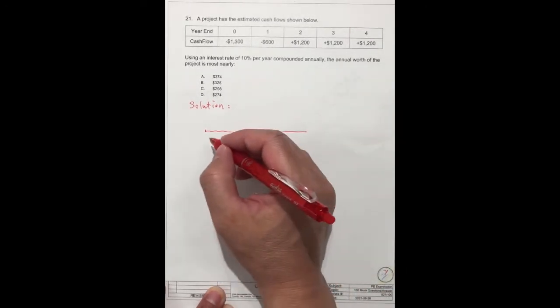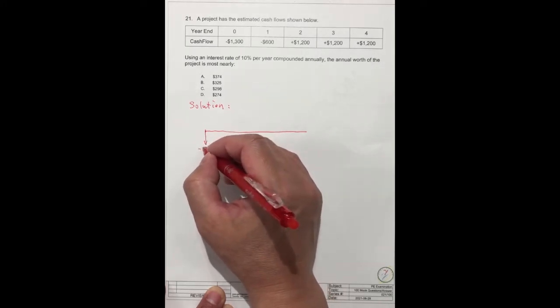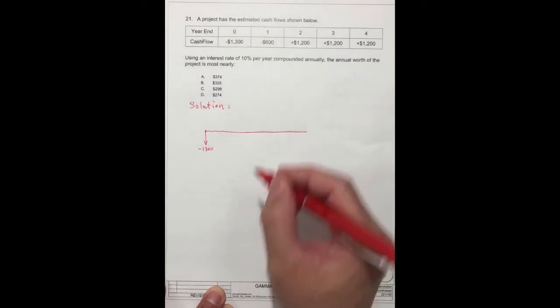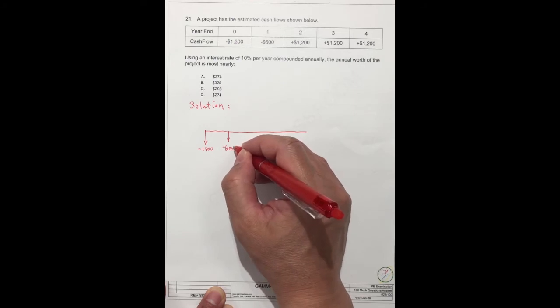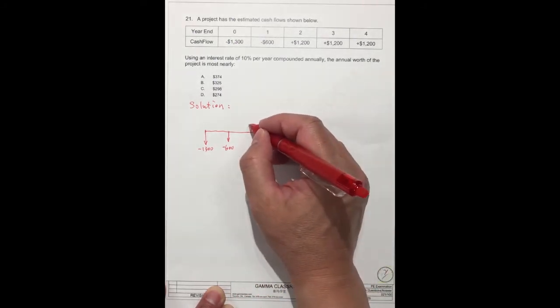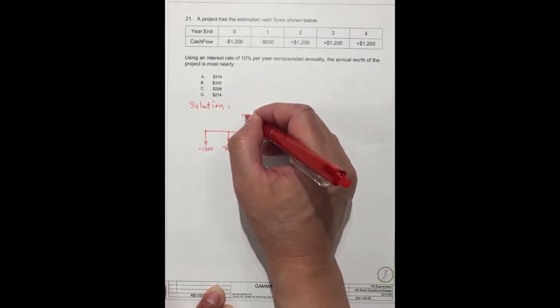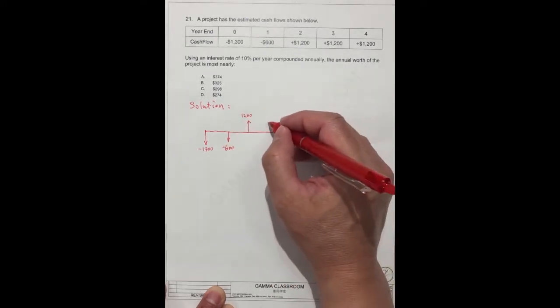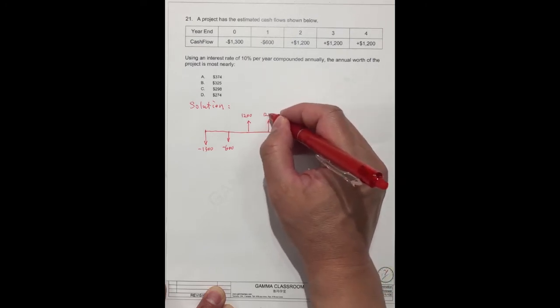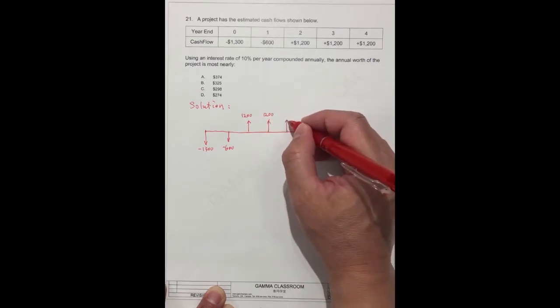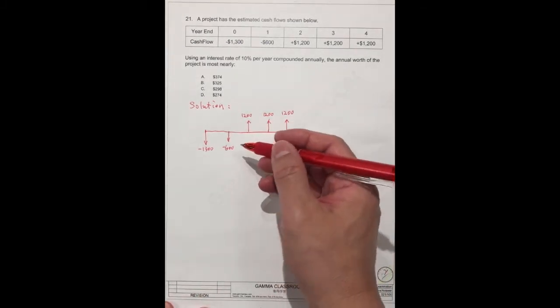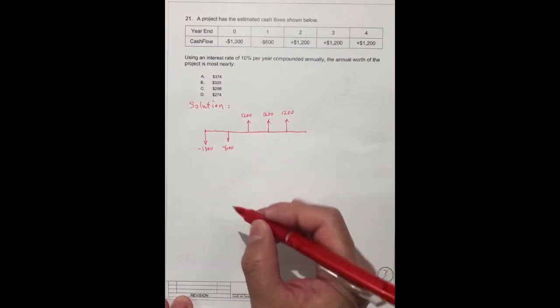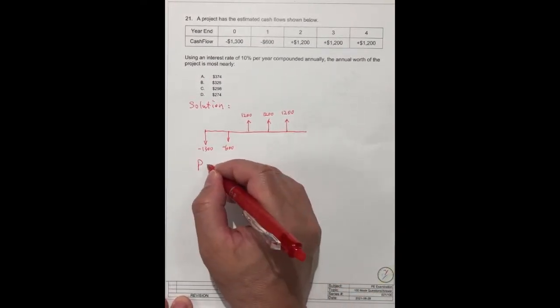We can use this way as a time frame here. This is year zero, minus $1,300. After one year, it's still minus $600. Two years is positive $1,200. Three years is $1,200. Four years later is another $1,200. We can transfer all the values to the present, so we can get the present value.